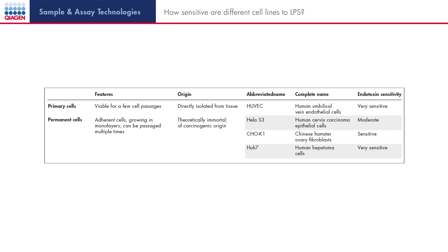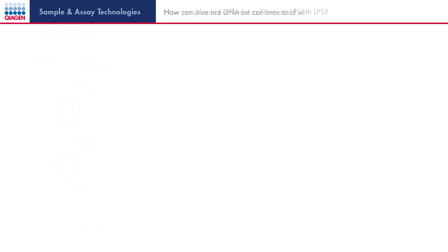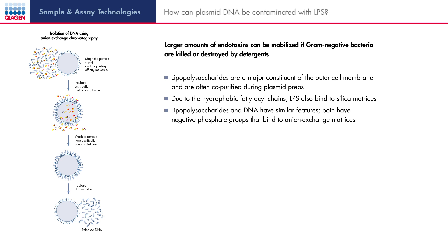Primary cells are very sensitive to endotoxins. The sensitivity of permanent cells can vary and depends on the cell type. For example, the human umbilical vein endothelial cell line is a more robust cell line, whereas the Chinese hamster ovary fibroblast cell line is sensitive and the human hepatoma cell line is very sensitive. LPS is released when bacteria die or are destroyed, which occurs during plasmid purification, and during this process endotoxins can be co-purified. Using a silica matrix, endotoxins can be co-purified because the fatty acyl chains of the LPS are hydrophobic and bind to the silica membrane, competing with DNA molecules. Similarly, LPS has negative phosphate groups that bind anion exchange matrices during purification.